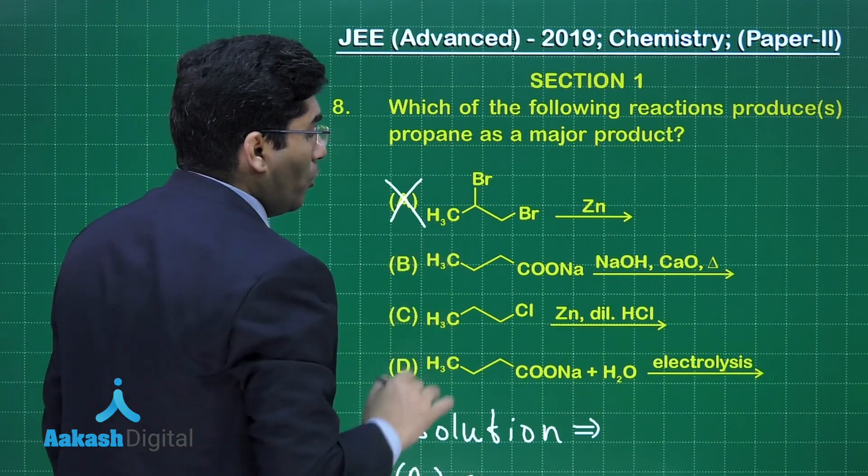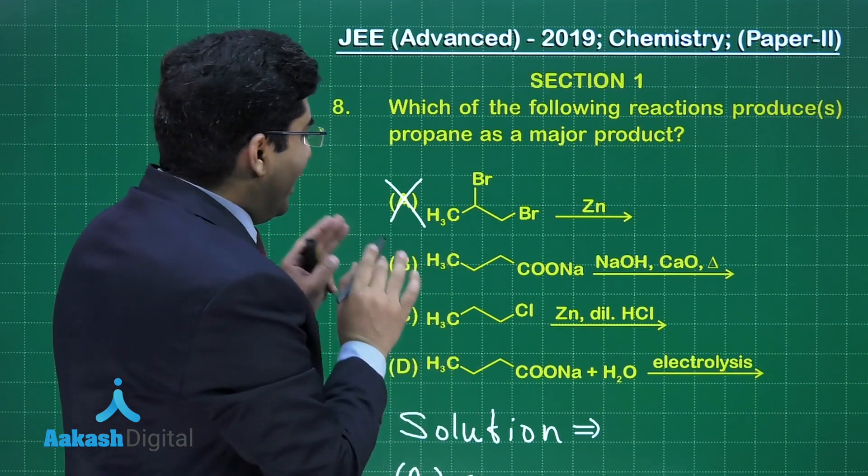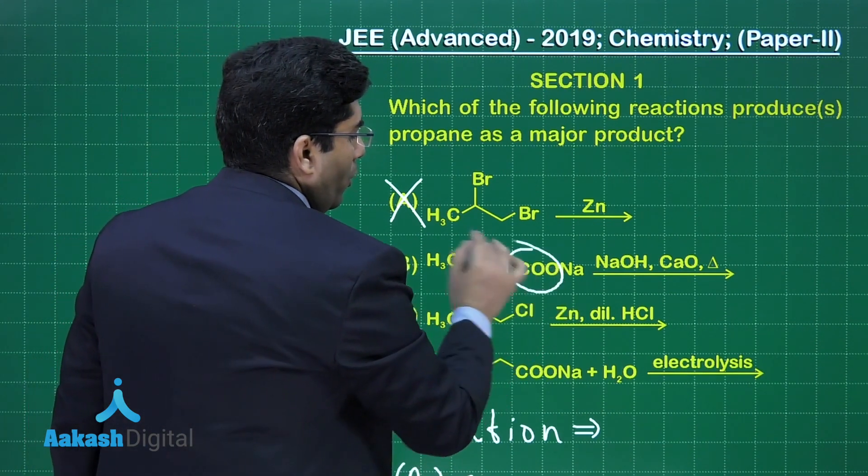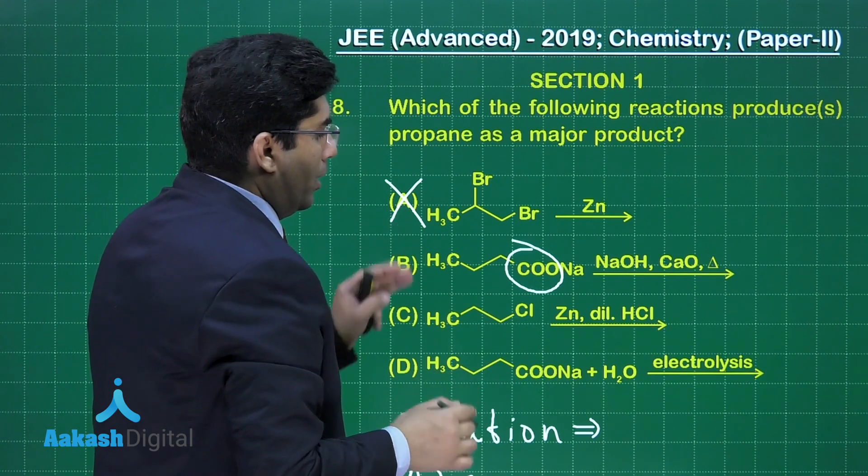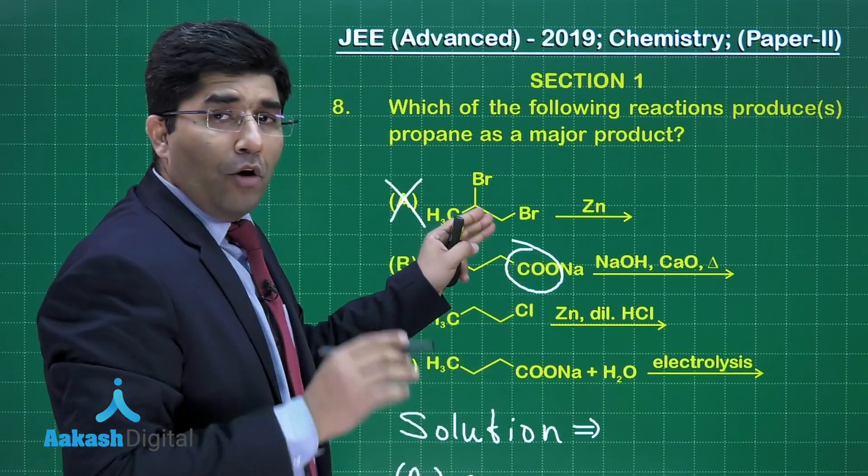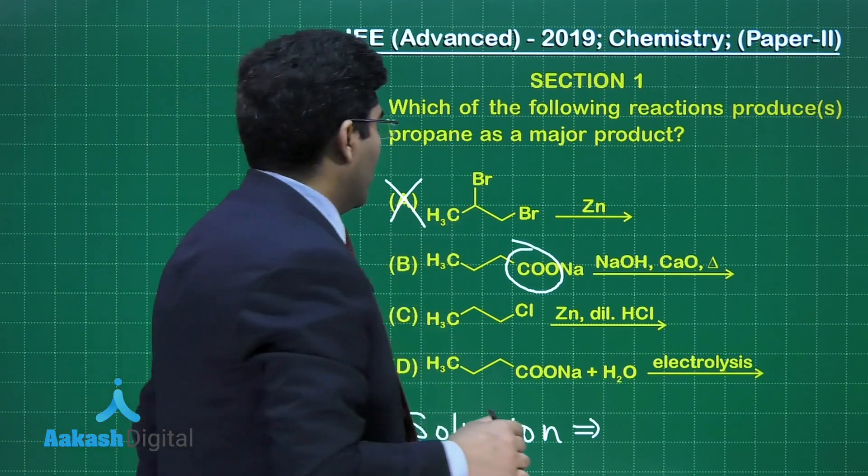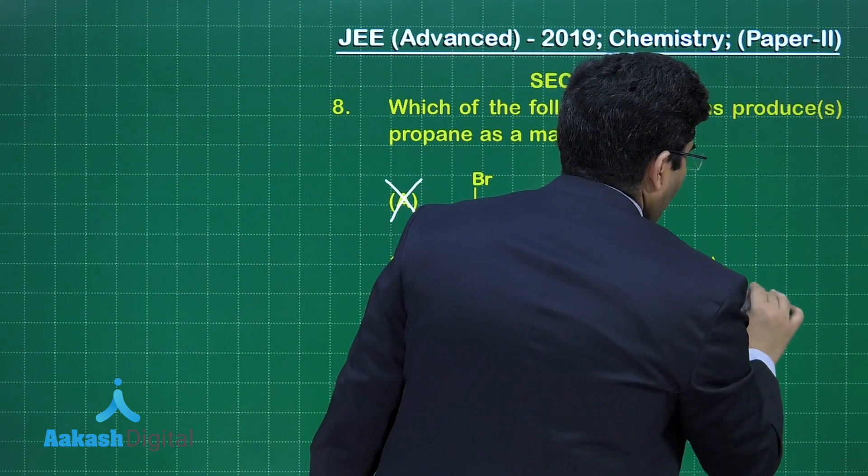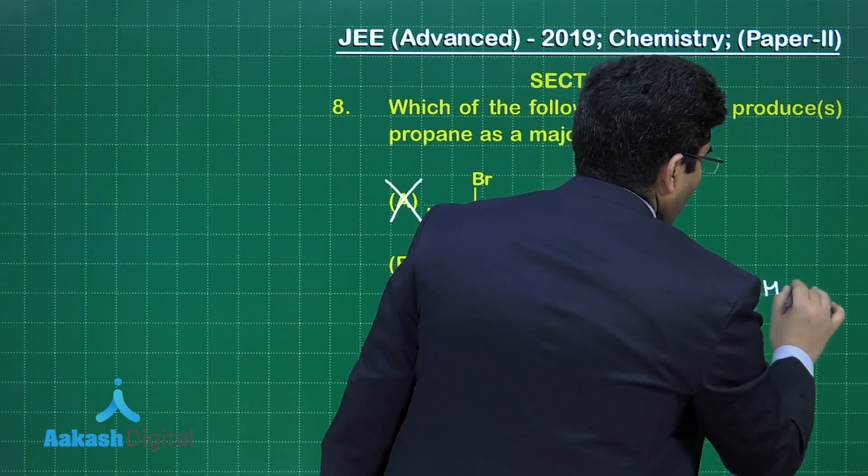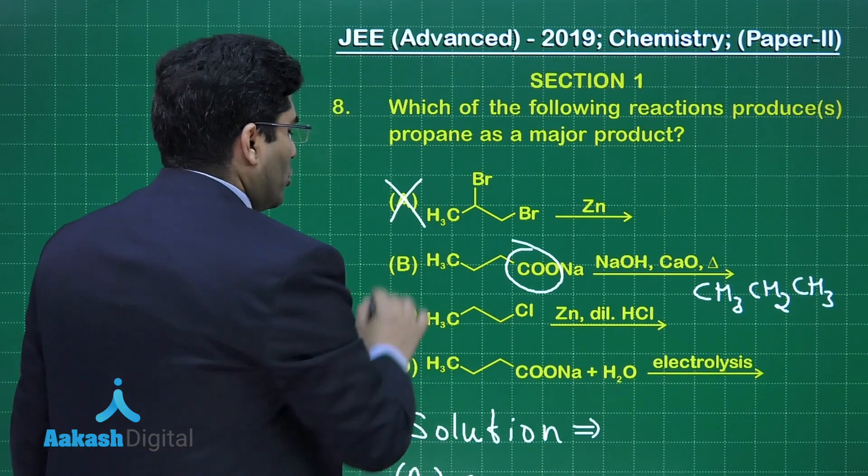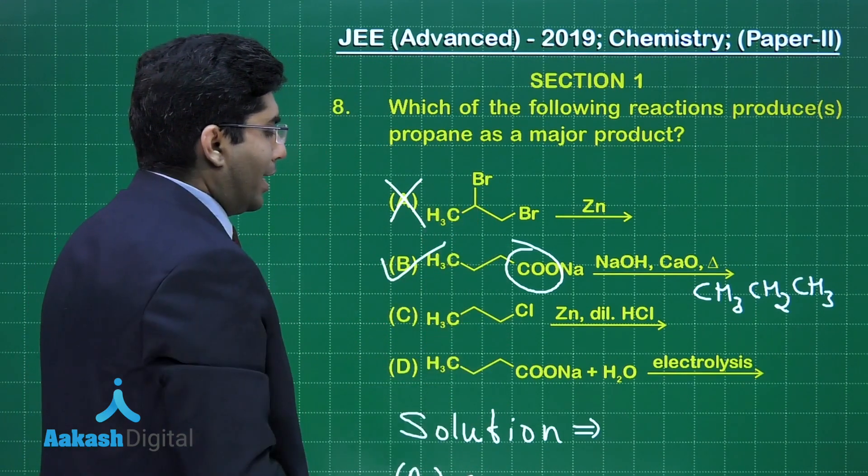Now if you talk about this one, this is decarboxylation. We all know that in decarboxylation, this CO₂ will be removed in the presence of NaOH and CaO in the ratio of 3 is to 1, and we will get CH₃-CH₂-CH₃. So it will give us propane. This is the correct answer.